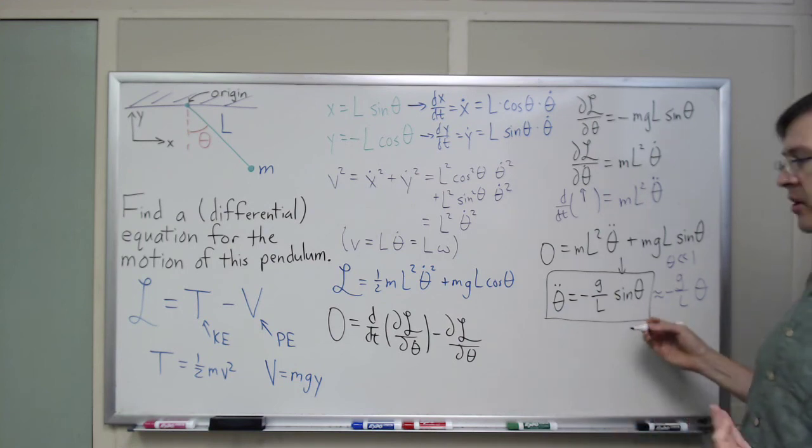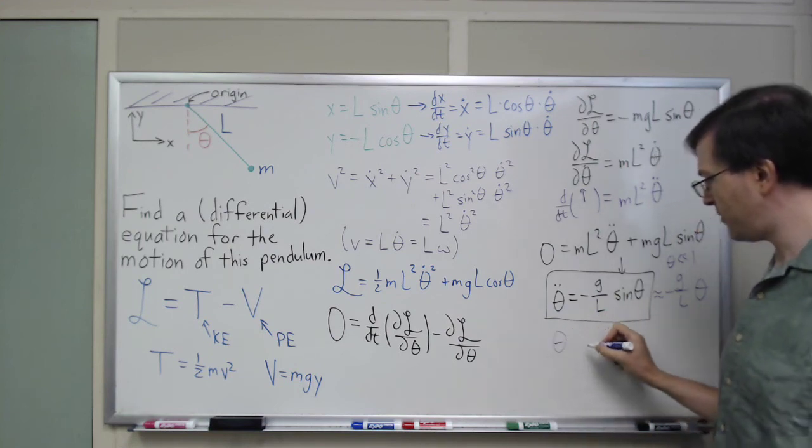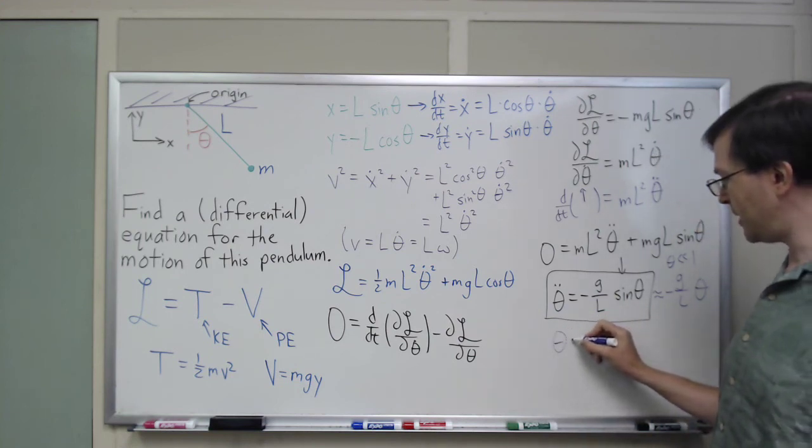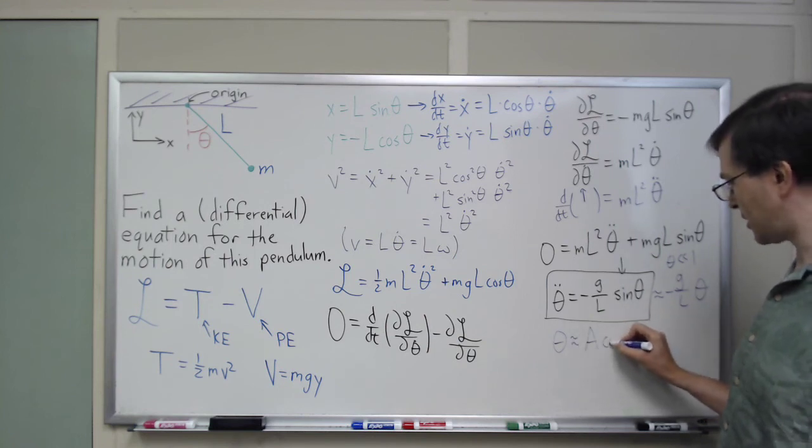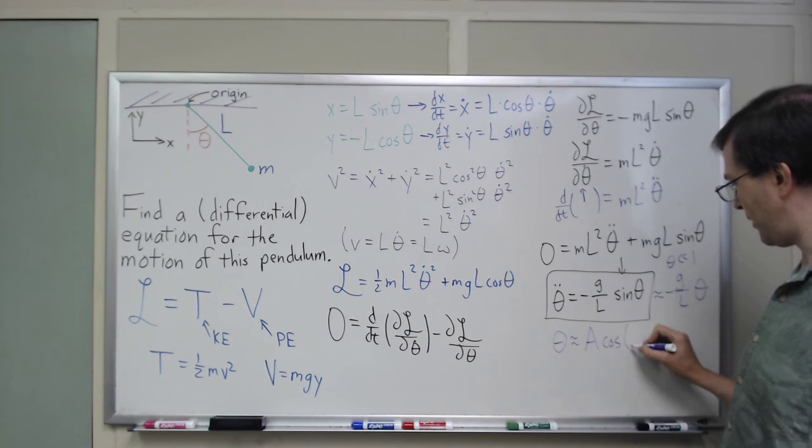This is when theta is much less than 1 radian. An approximate harmonic oscillator, we find that theta, then, is approximately, what is it, some amplitude times the cosine, for example, of omega t plus phi, for some constant phi.